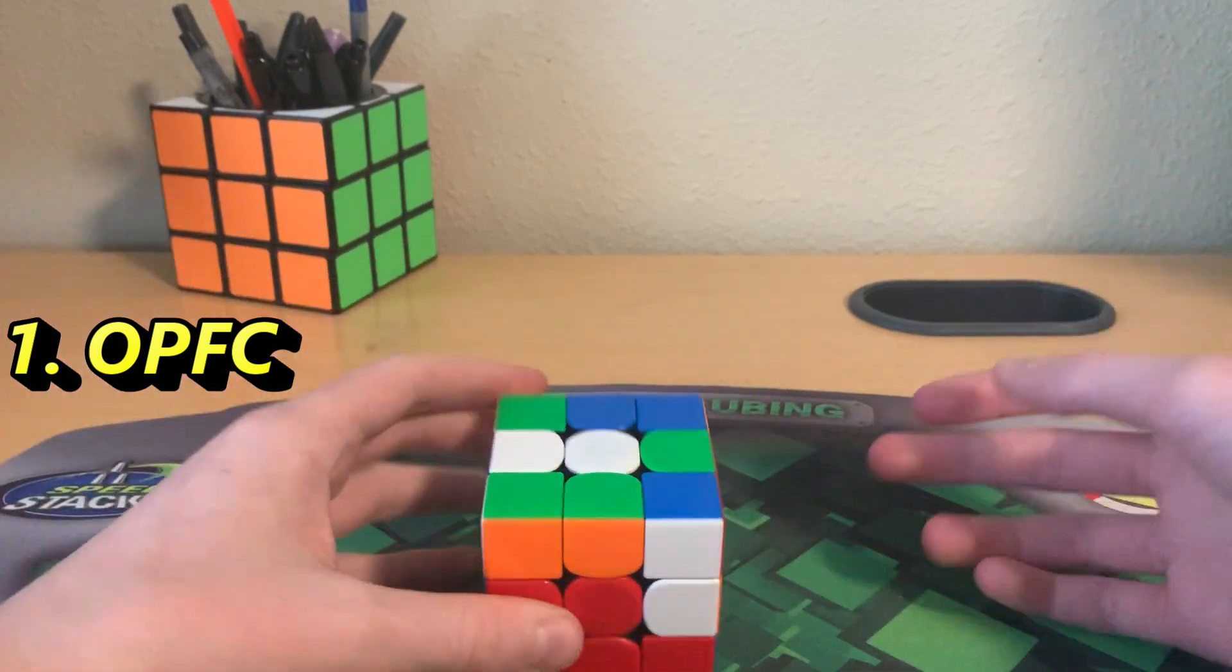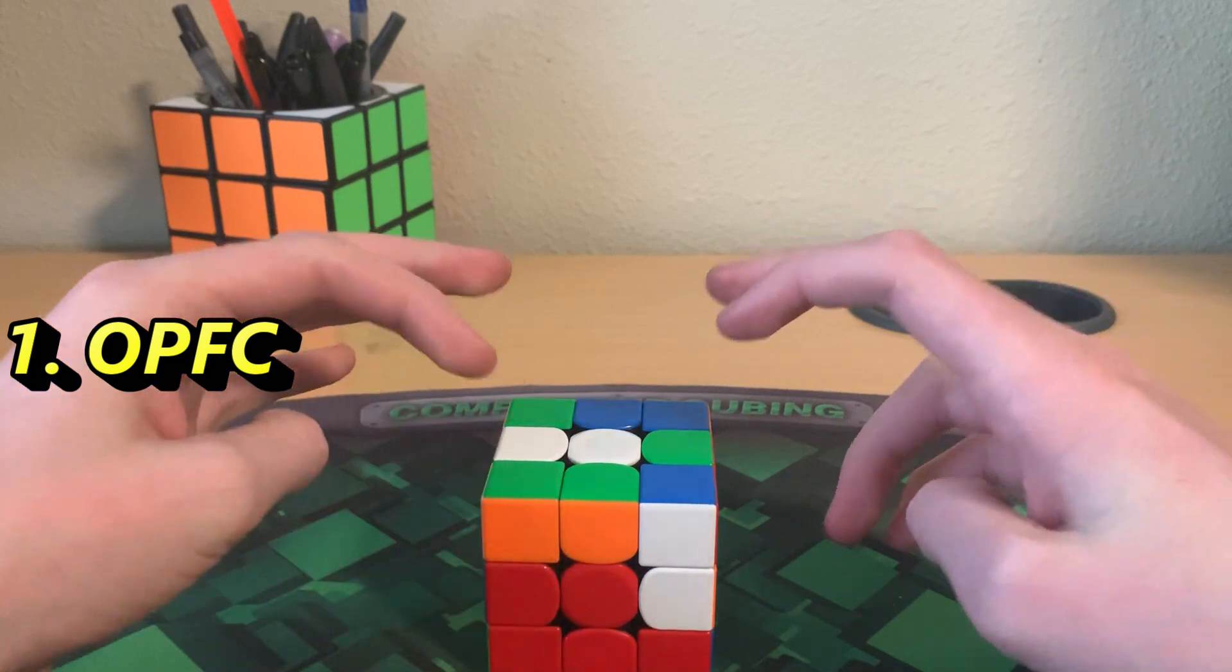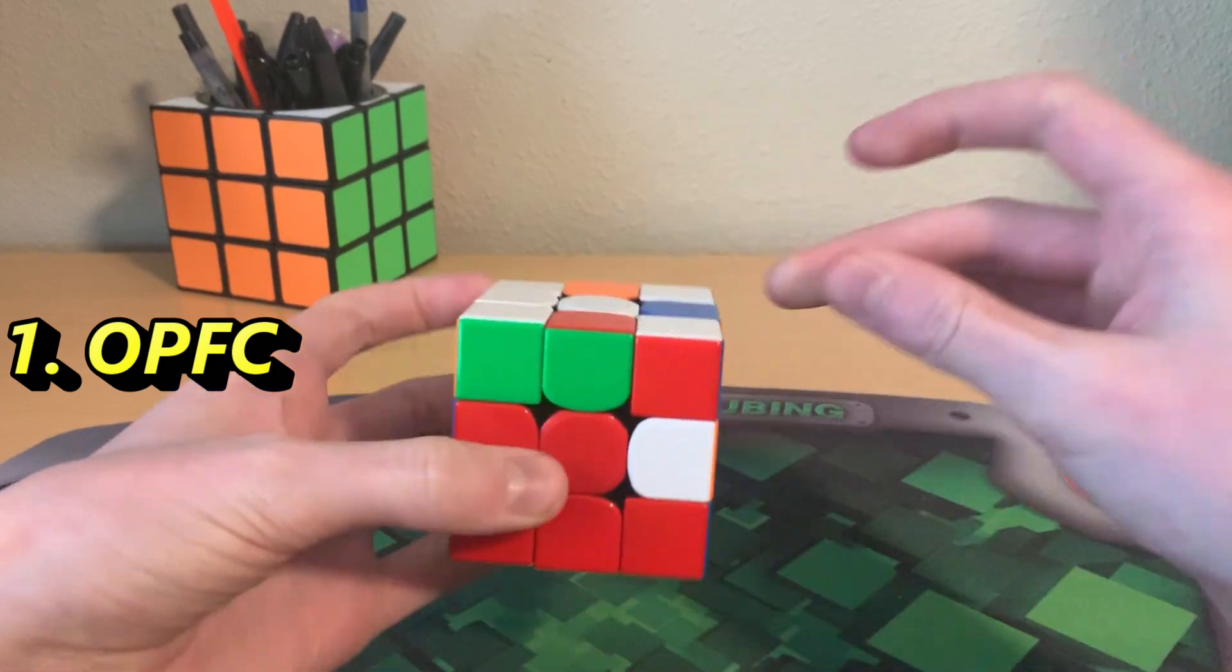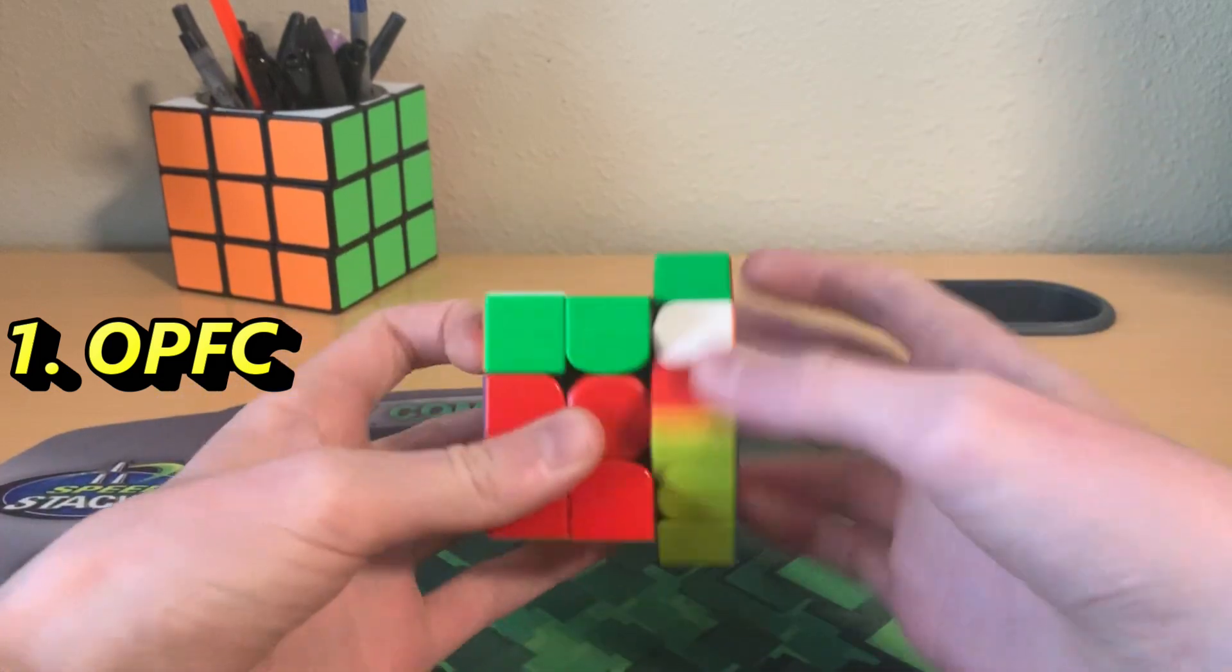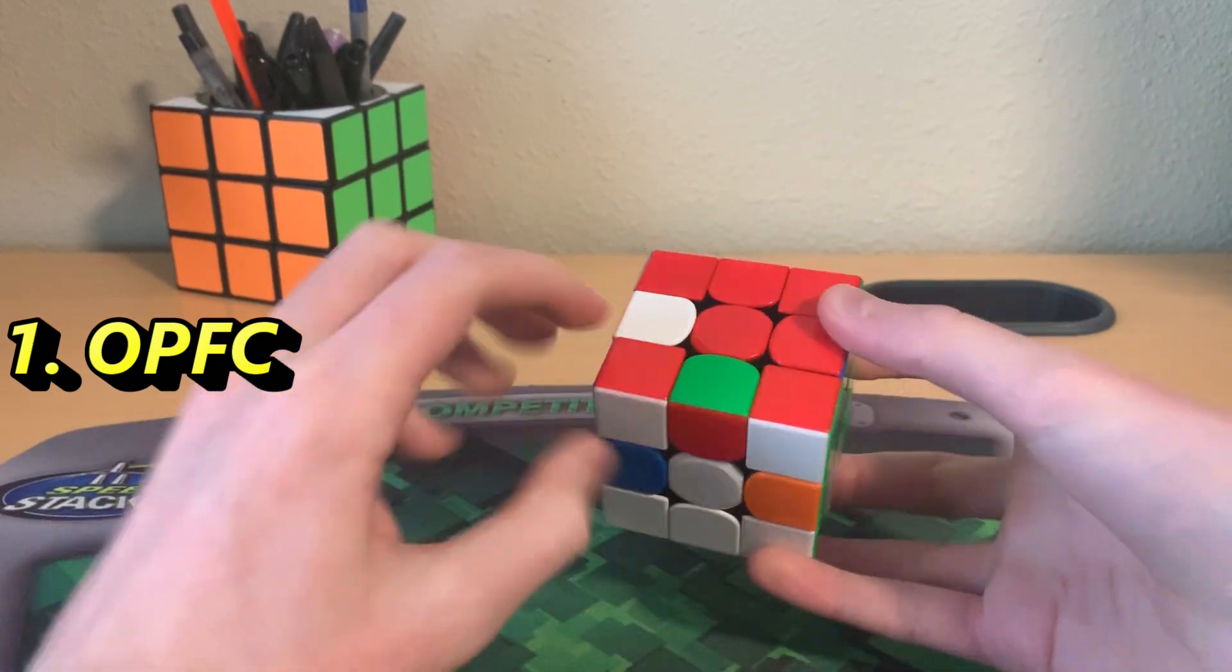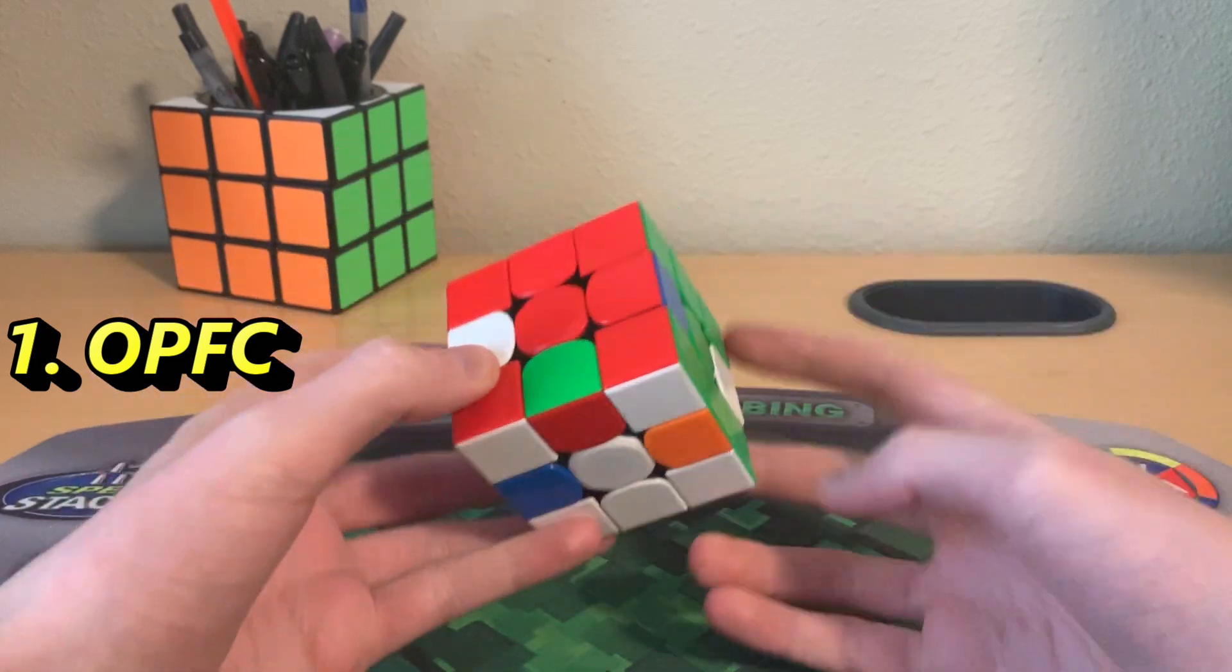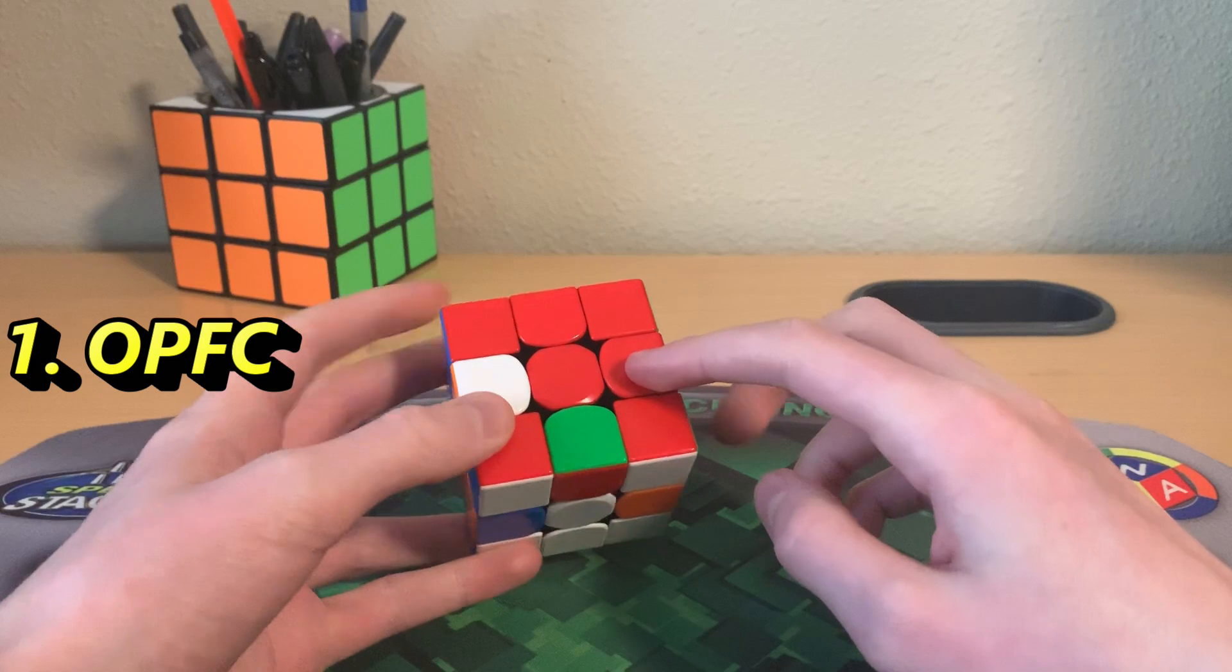Well, don't worry. We're actually going to solve the corners of the F2L pairs next. So just solve these corners. So now we have the corners of the F2L pairs and we just need these four F2L edges. And we're going to solve those using U-perms.